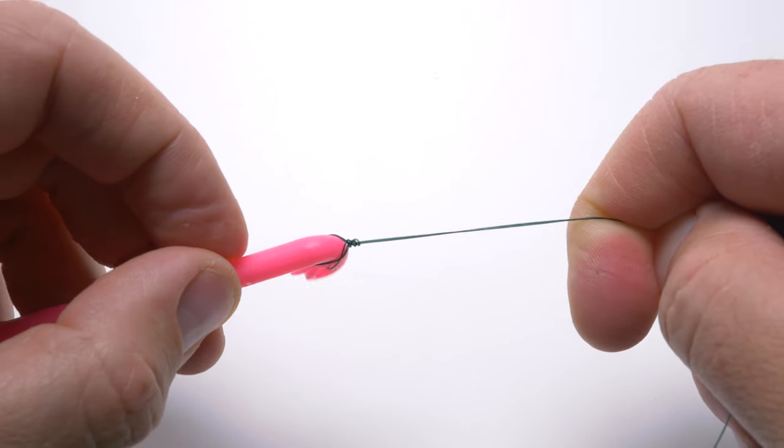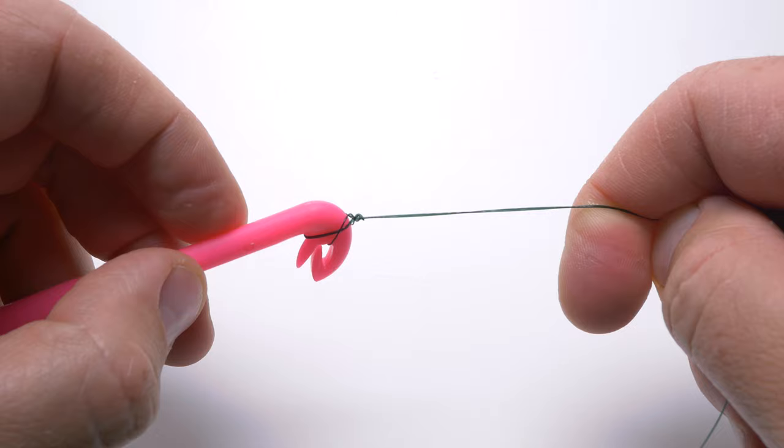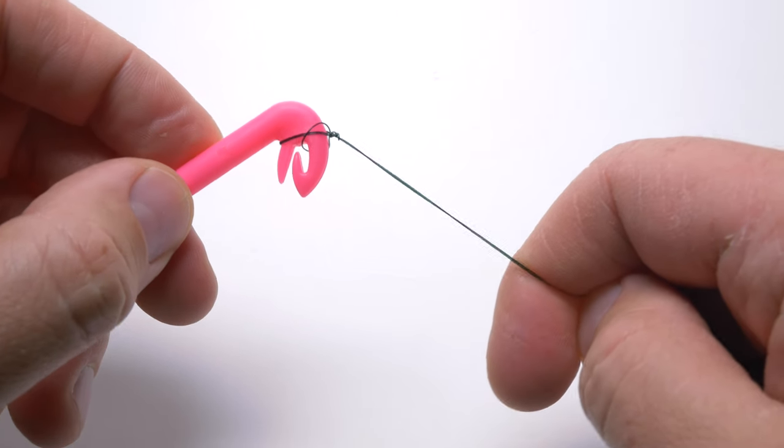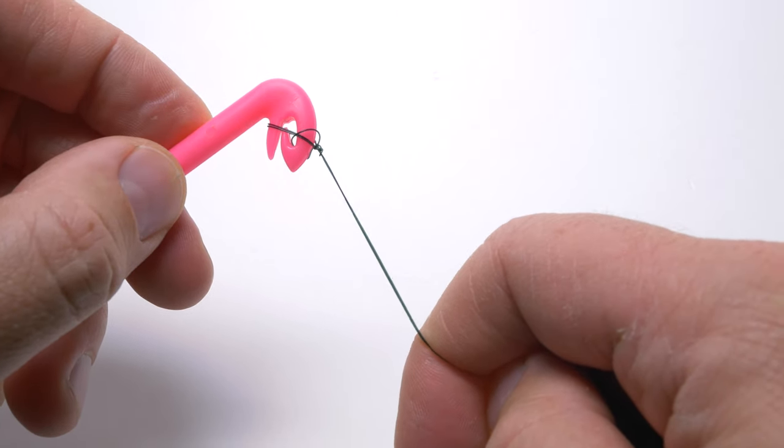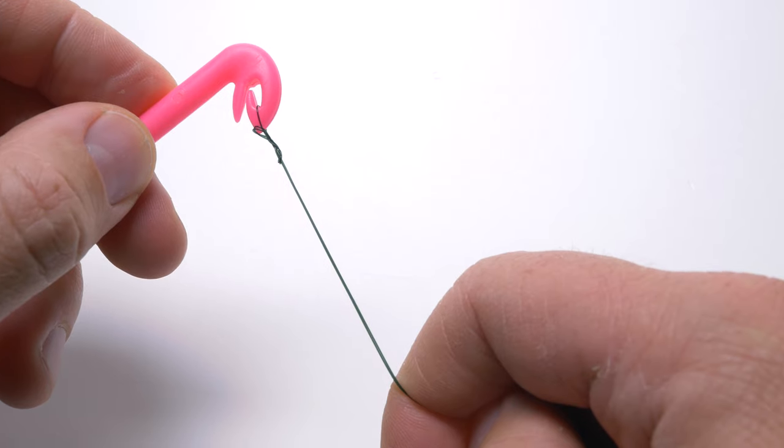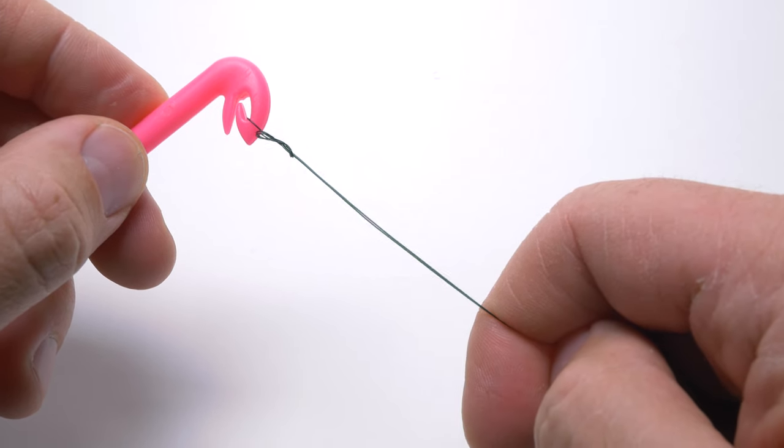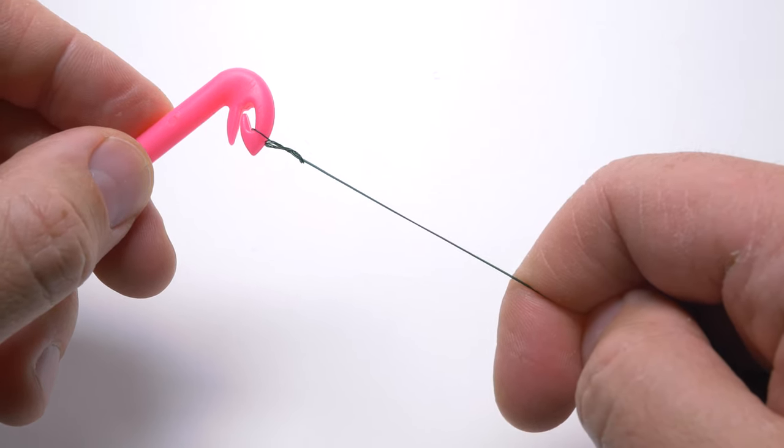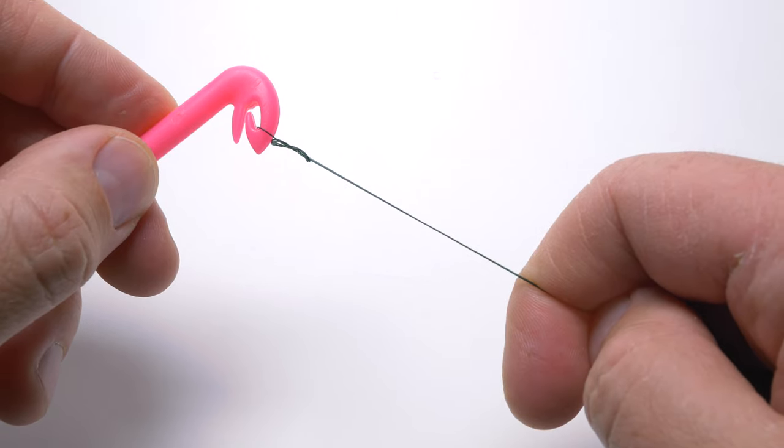Once it's tied, I will change the angle of the line so it would slip off the tool. Now it would be a good time to wet the knot and pull it tight.